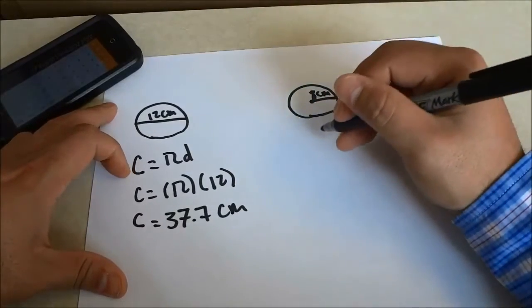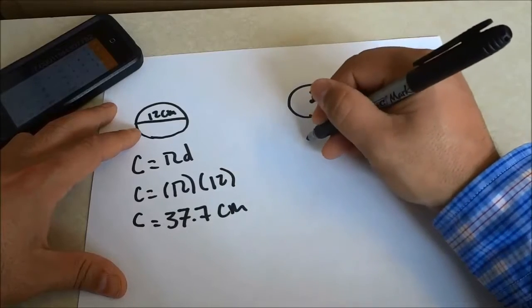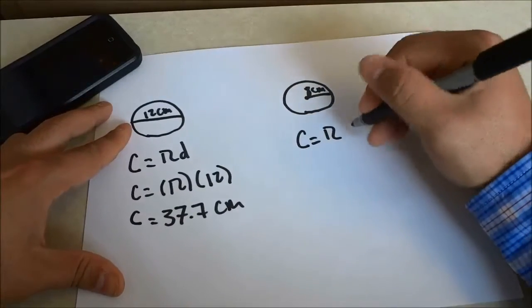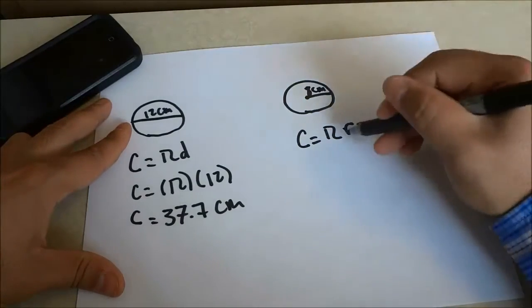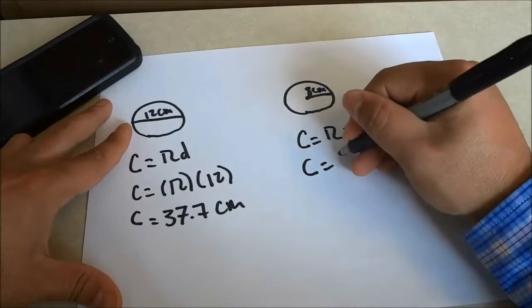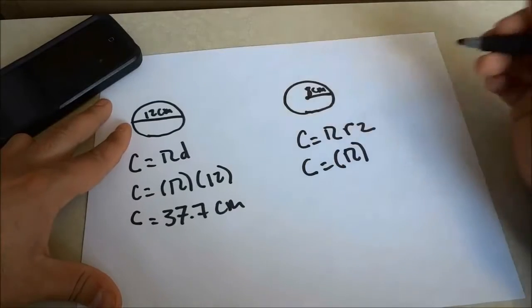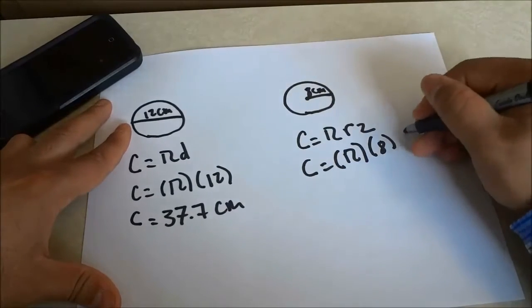But to solve this, all that I have to do is make sure that I use the radius formula, which is circumference of a circle is equal to pi times radius times 2. Very simple, πr2. And the circumference of a circle is therefore equal to pi times the radius, which is 8 centimeters, times 2.